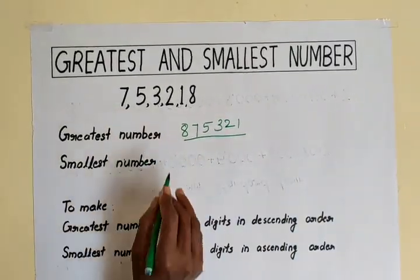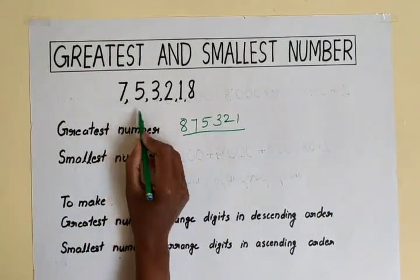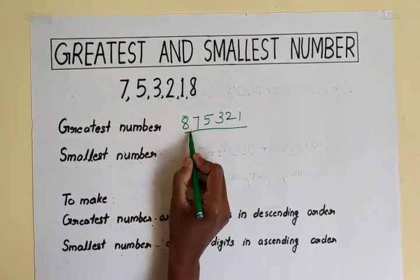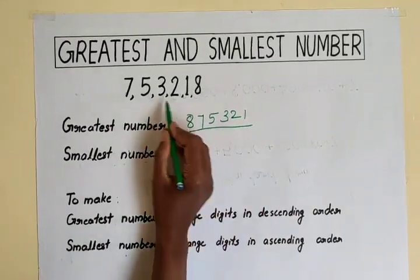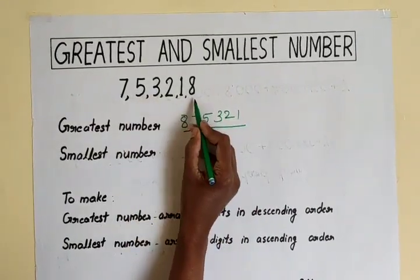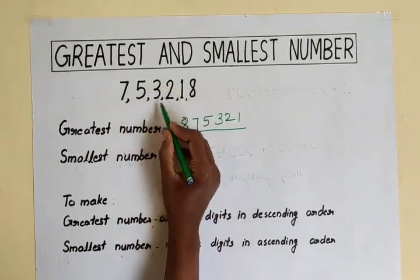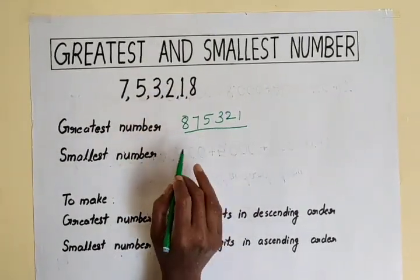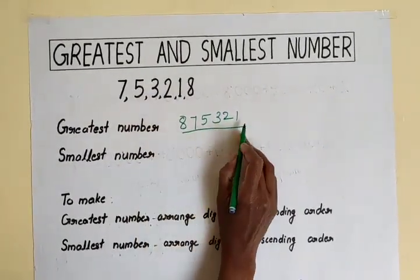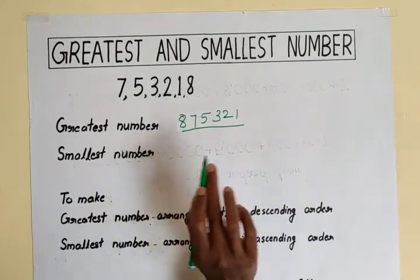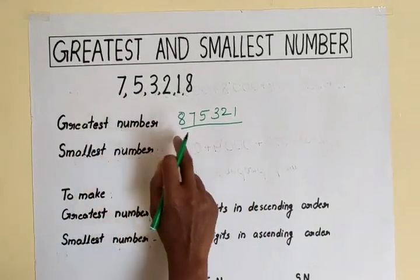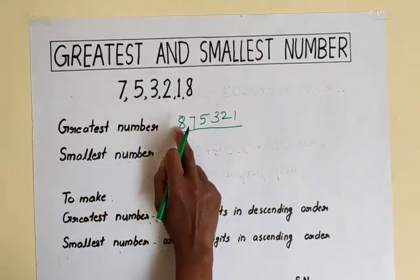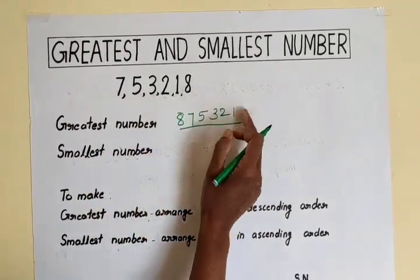You listen to one thing: there is no need to put commas between the numbers. These are separate digits, that's why we put commas. But while writing the number, don't put commas. So here we arrange it in descending order.